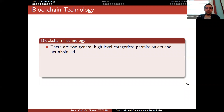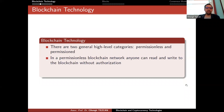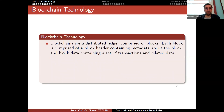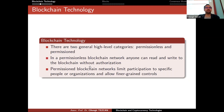There are two general high-level categories: permissionless and permissioned. This is really important because many people don't know that permissioned blockchains exist — everybody thinks about Bitcoin, which is permissionless, so they think everything is permissionless. In a permissionless blockchain network, anyone can read and write to the blockchain without authorization. Permissioned blockchain networks limit participation to specific people or organizations and allow finer-grained controls. Blockchains are distributed ledgers comprised of blocks; each block is comprised of a block header containing metadata and block data containing a set of transactions.